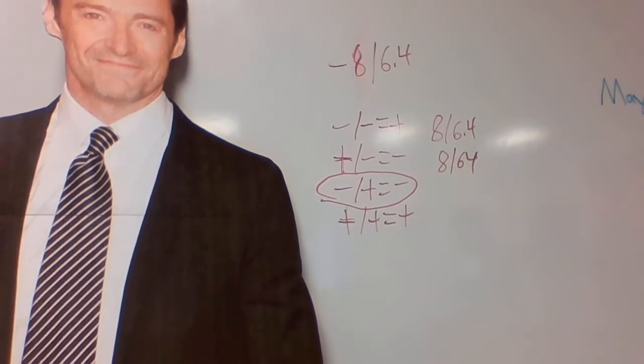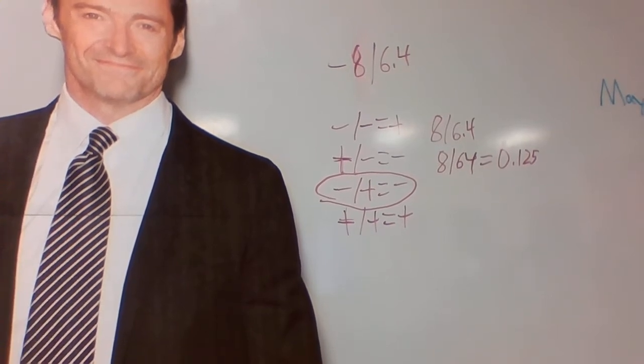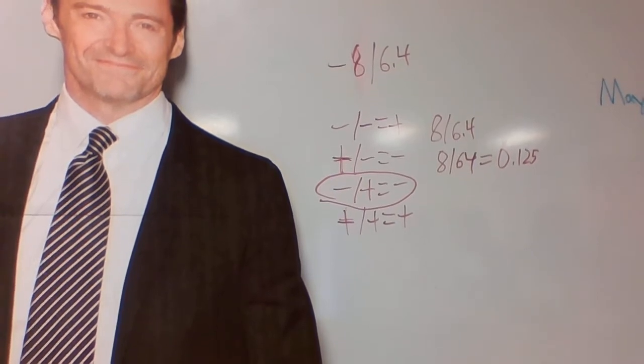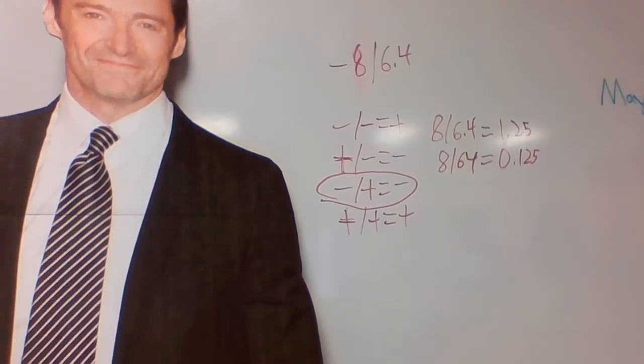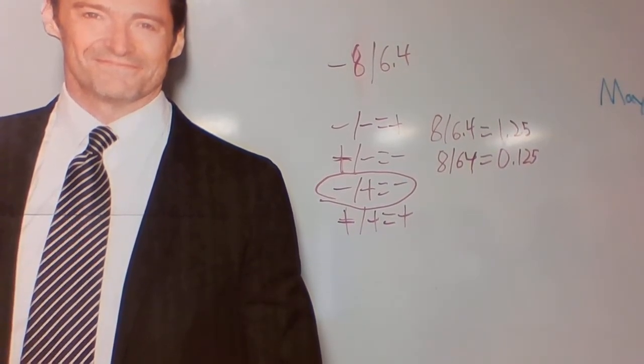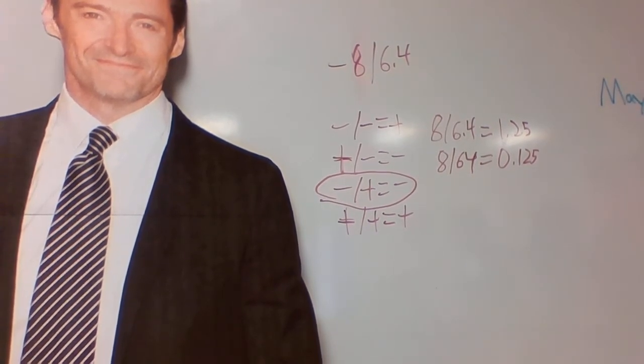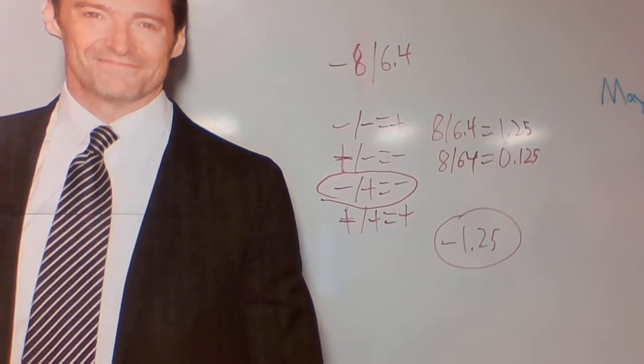by using basic division, we know that 8 divided by 64 is 0.125. So, since our previous equation is 8 divided by 6.4, we'll have to accommodate our answer for that. So since it's 6.4, we'll have to move our point in our answer to the right once, making the answer 1.25. And since we have decided on a rule previously, our final answer is negative 1.25.